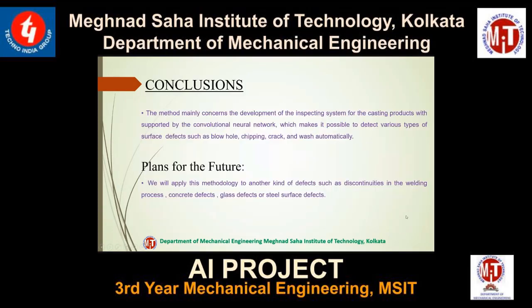In conclusion, we used the CNN model to detect different types of cast products — whether they were defective or in perfect condition. For defective products, we detected blow holes, chipping, cracks, or any other defects present, and automatically classified the product as defective. If nothing was present, it would classify it as an okay product. In future, we plan to use this for processes like welding, concrete defects, and glass defects to make it easier for industry workers to classify products efficiently. Thank you.